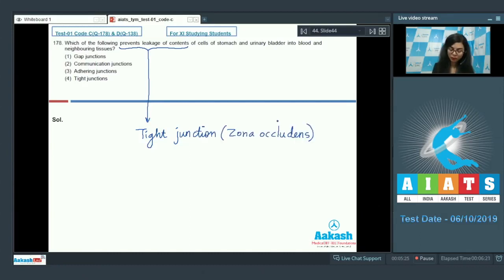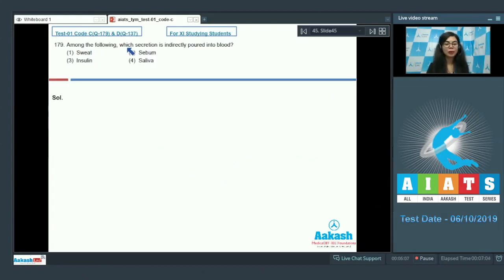Such tight junctions also occur in the apical part of epithelial tissue, and these stop substances from leaking across the tissue. So the correct answer here would be option number 4, tight junctions. Whereas gap junctions allow the exchange of ions or cell contents, and adhering junctions help cells to be together tightly bound.